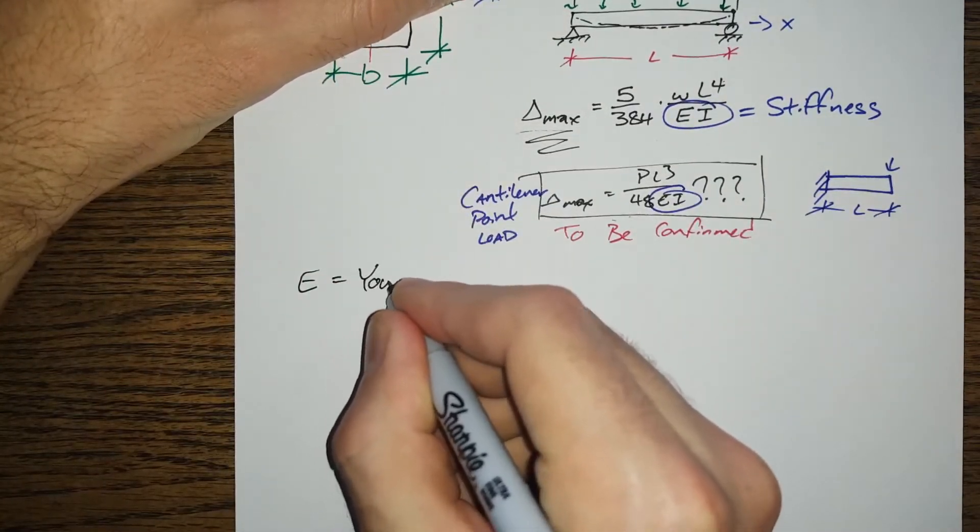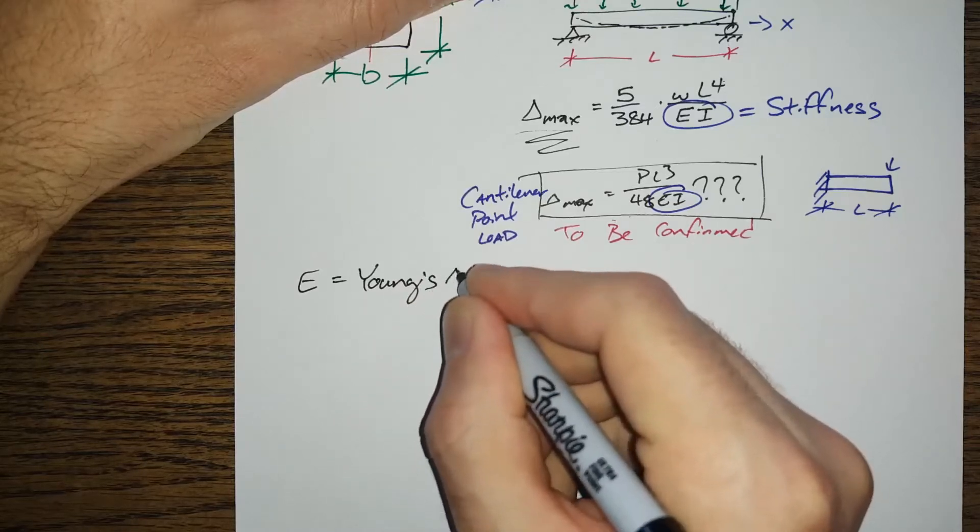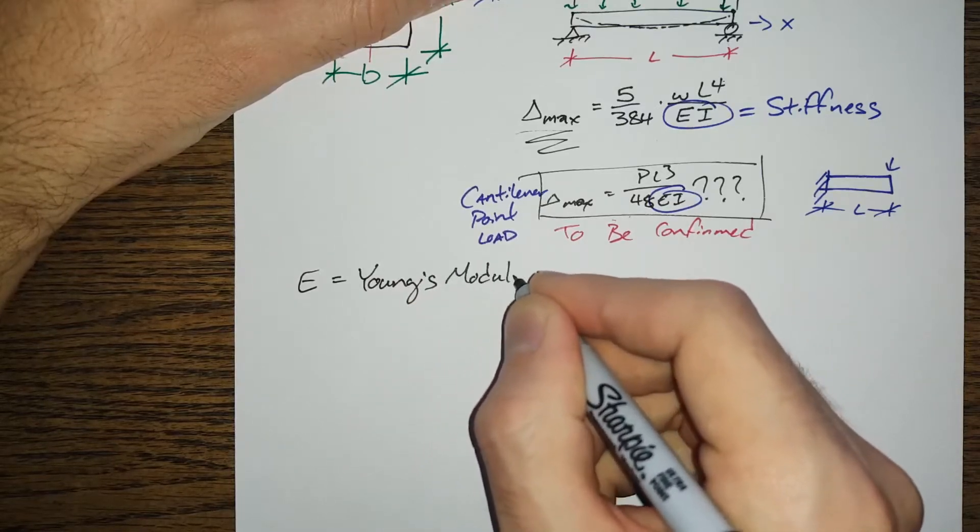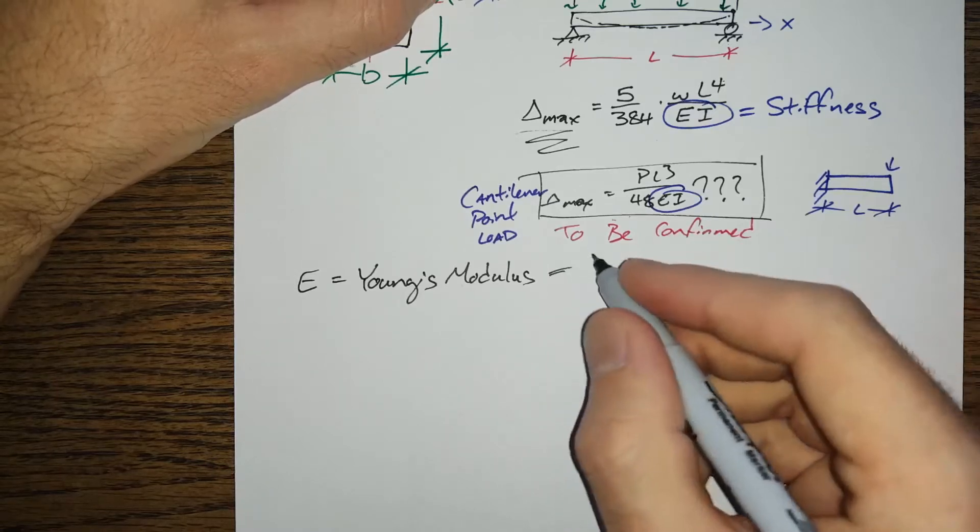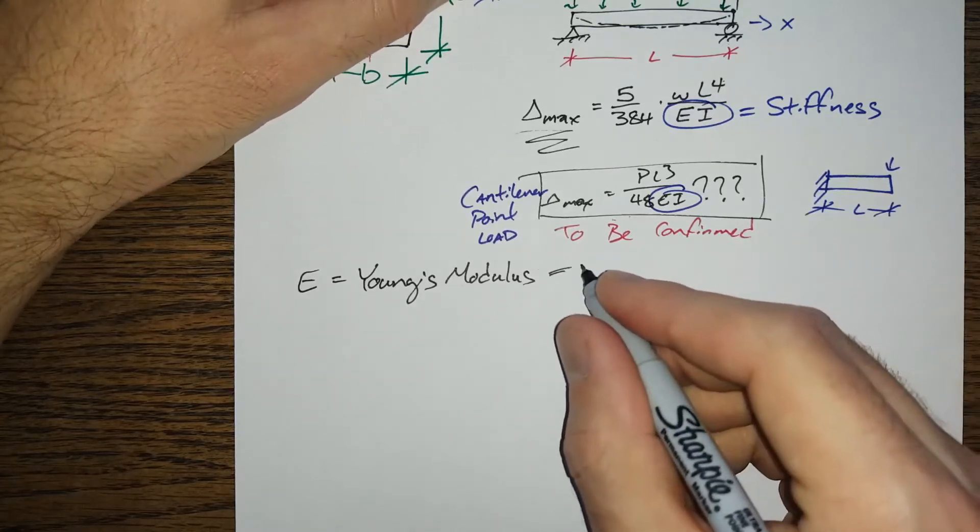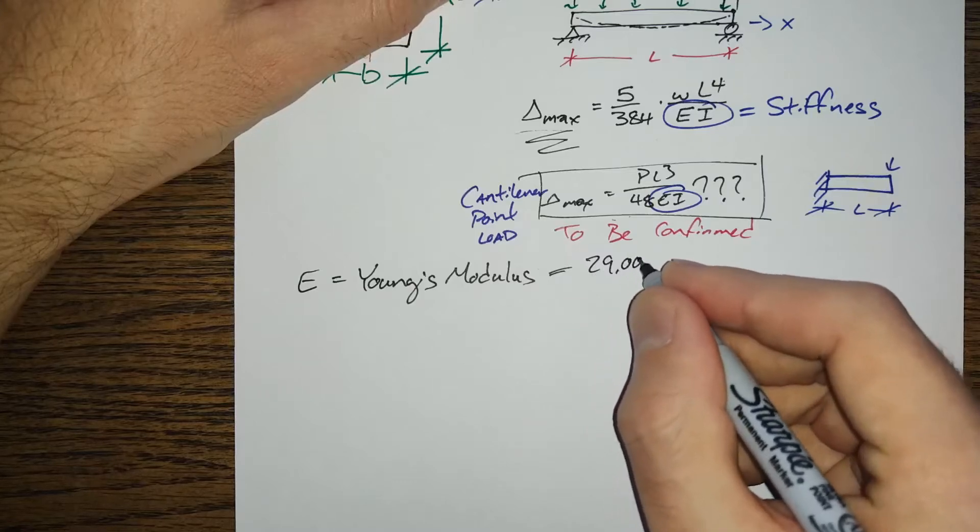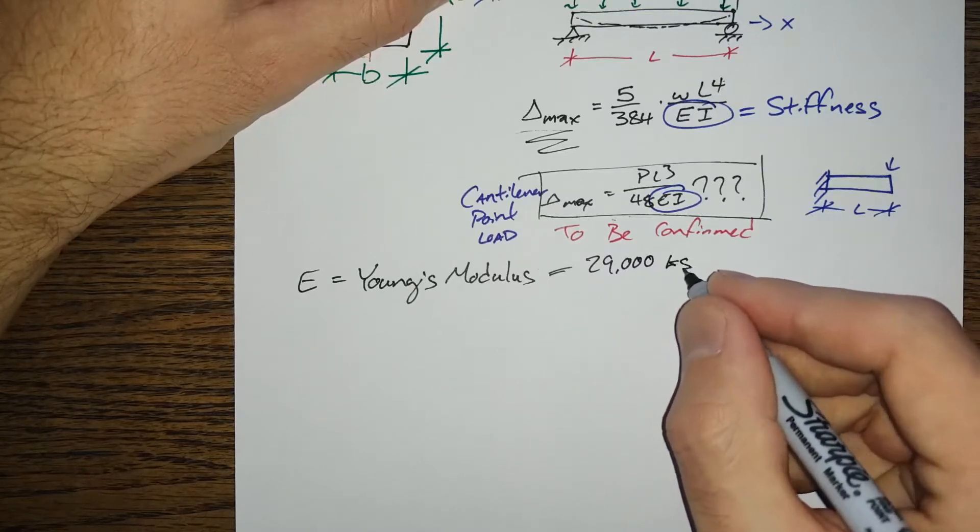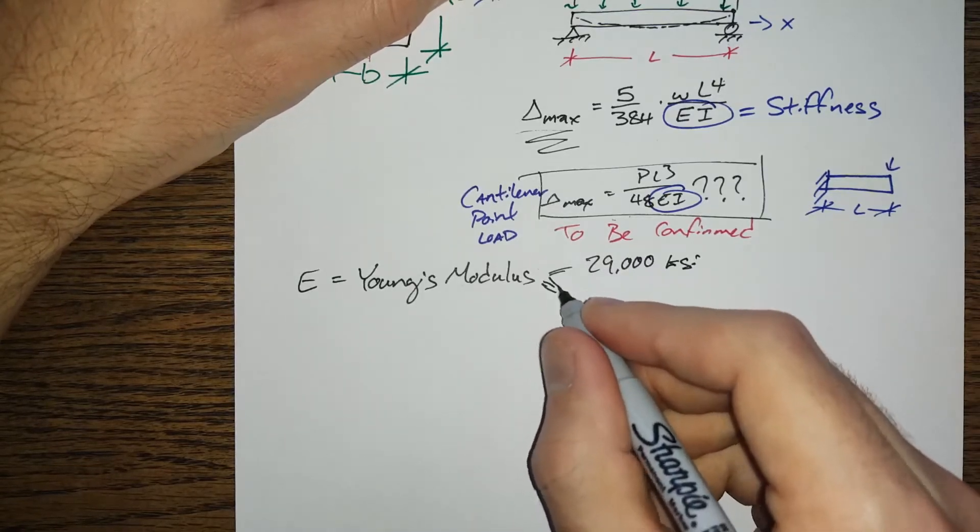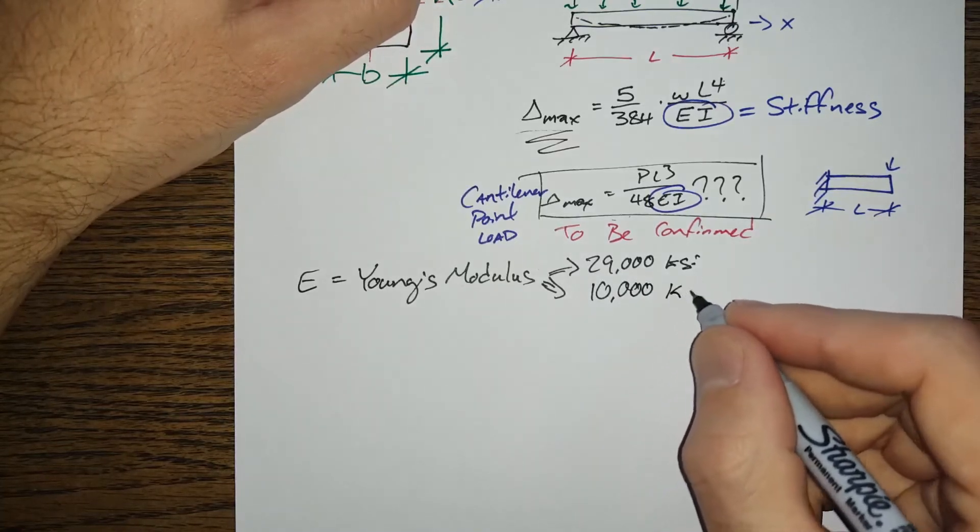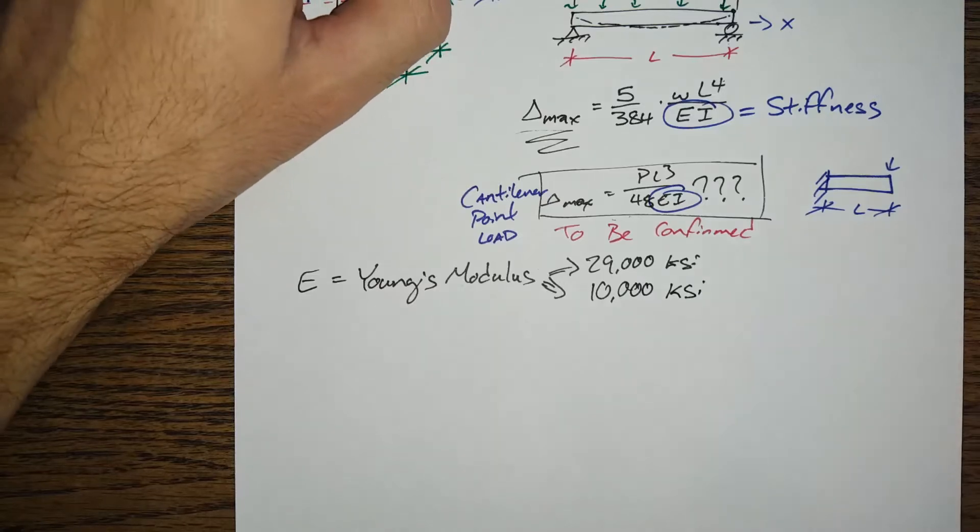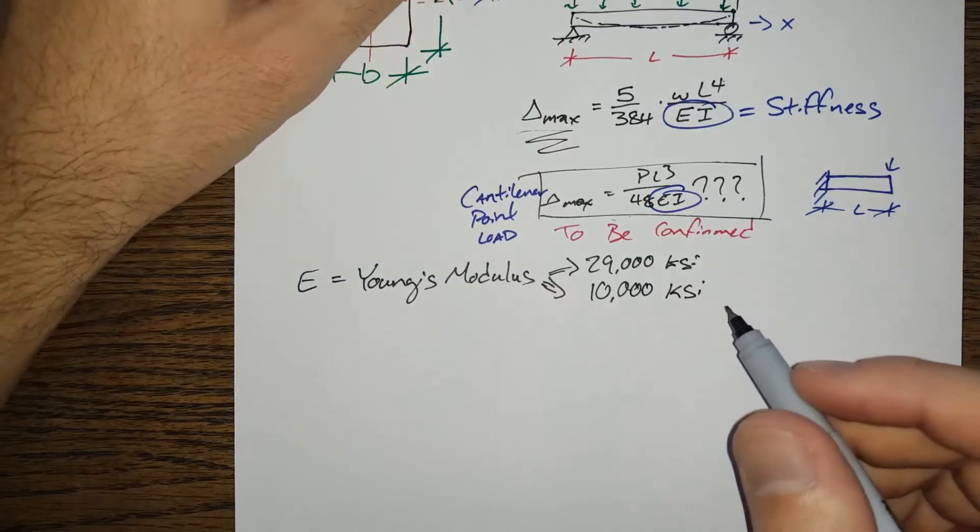This is our Young's modulus, it is a material property, it's how stiff the material is. So for steel, any steel or just about any steel, it's 29,000 ksi. For aluminum, which is what I work in most of the time, we've got 10,000 ksi.